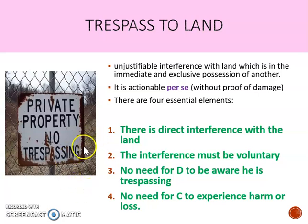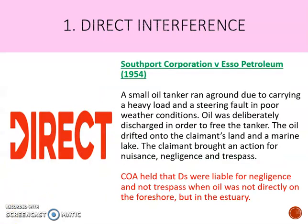Element one is that there has to be direct interference with the land, illustrated in the case of Southport Corporation v Esso. An oil tanker had run aground and oil was deliberately discharged in order to free the tanker. The oil drifted onto the claimant's land and into a marine lake. The claimant brought an action for nuisance, negligence, and trespass.